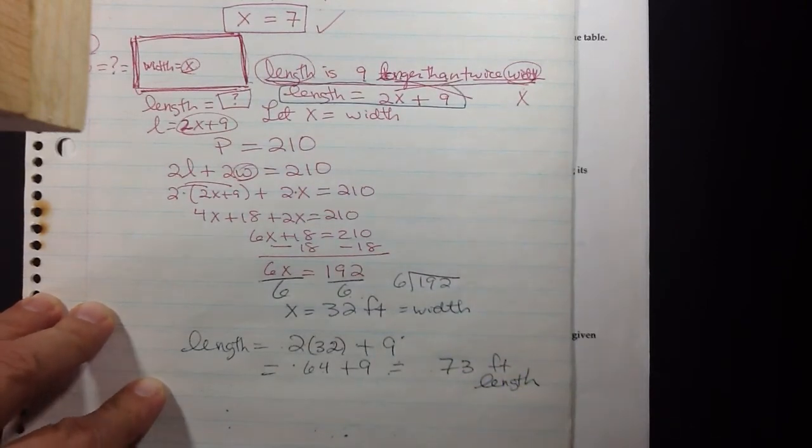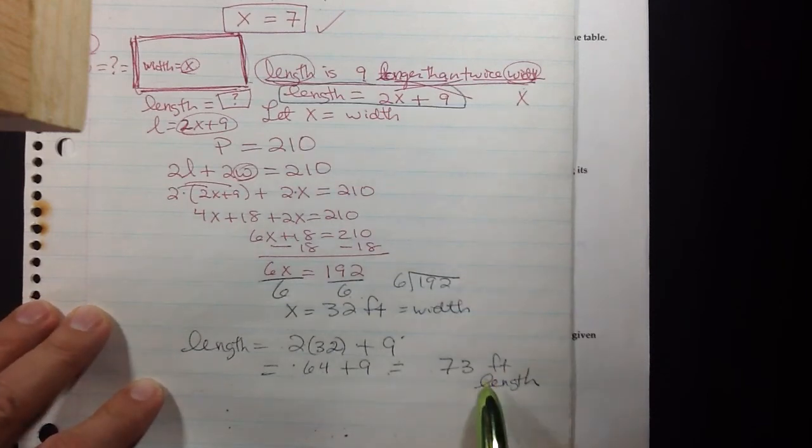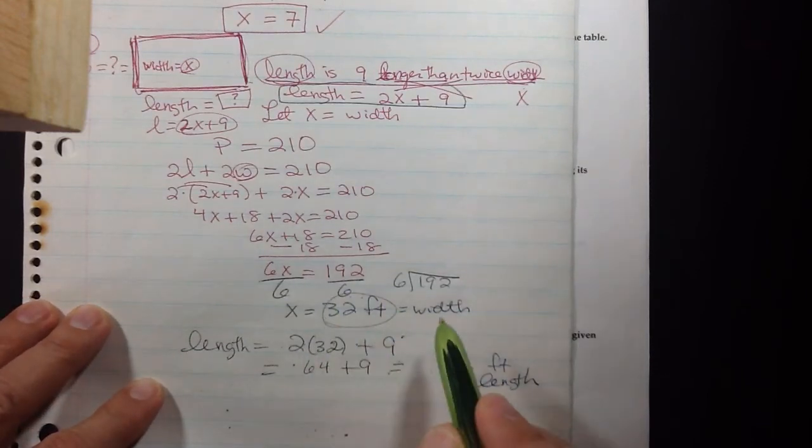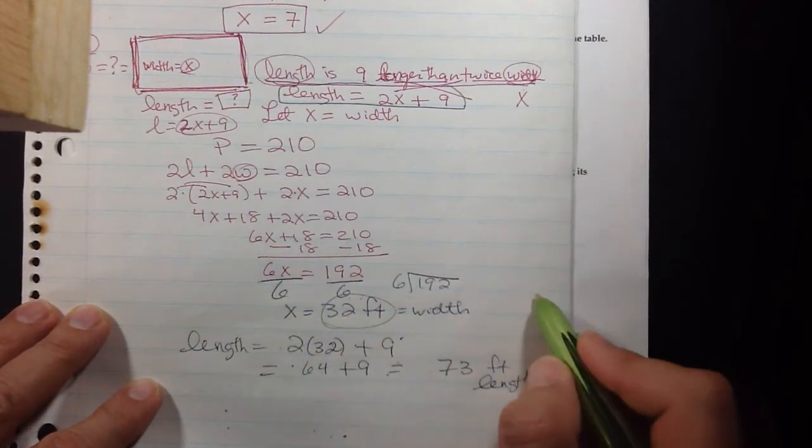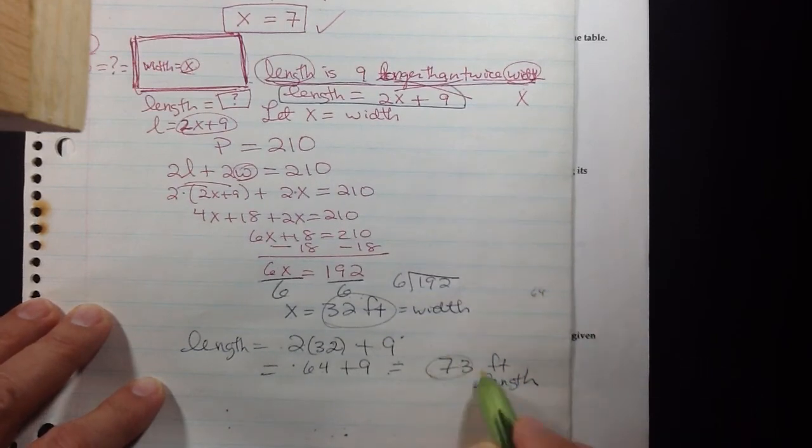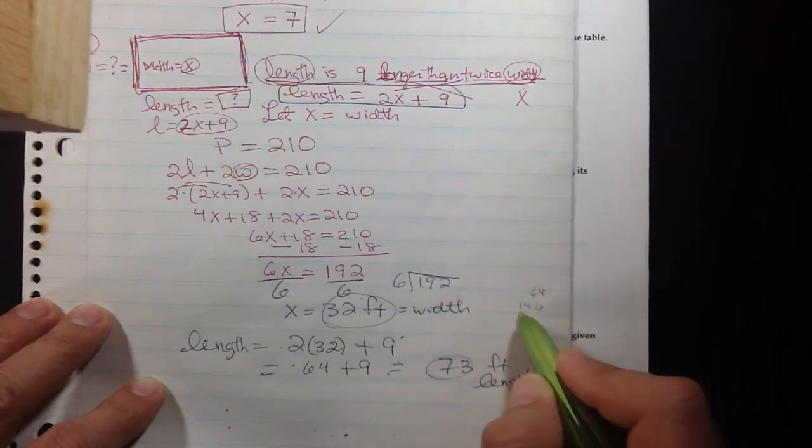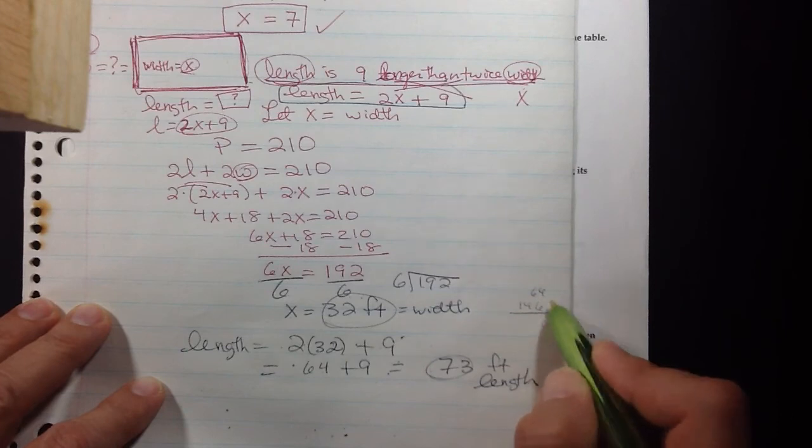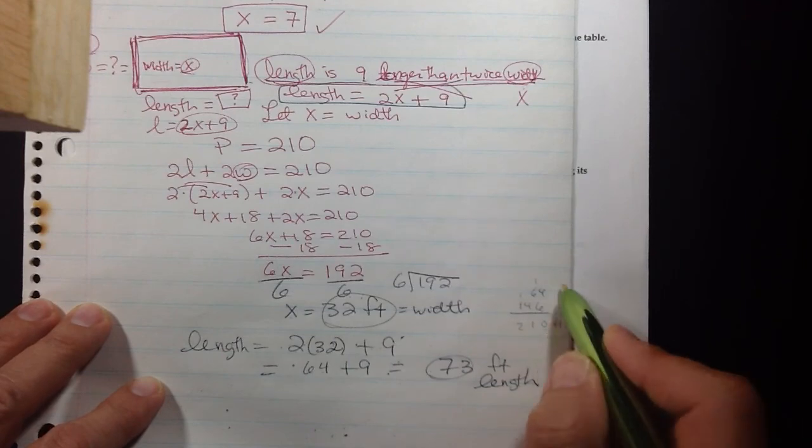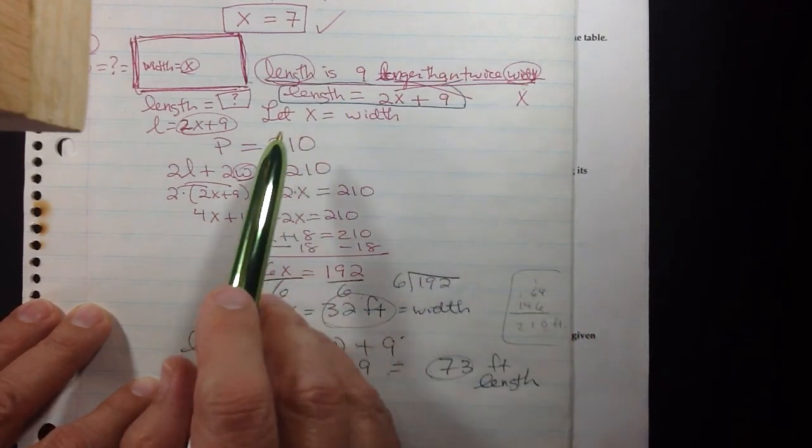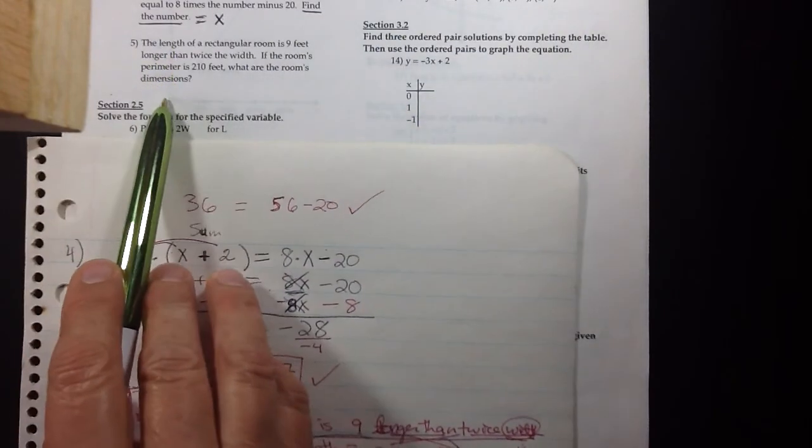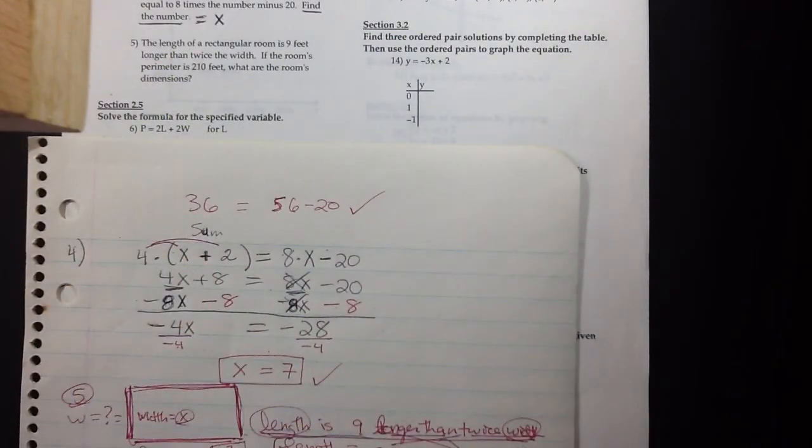Okay, and then we could check this by going double the width would be 64, double the length is 146, and when you add that together that should be the perimeter. And so the perimeter would be 210 feet and that indeed is what the story gave the perimeter to be, so we're good.